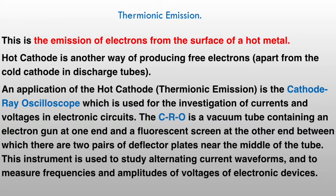Let's look at thermionic emission. Thermionic emission is the emission of electrons from the surface of a hot metal. When heat is applied to the surface of a metal and the metal gets hot enough, electrons are emitted from the surface of that metal. This is what we call thermionic emission. Further explanation is on a video called Energy Quantization — you will learn a lot about thermionic emission in that video.